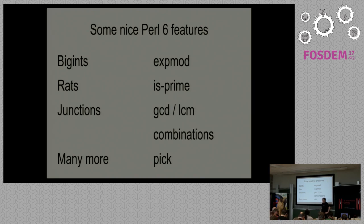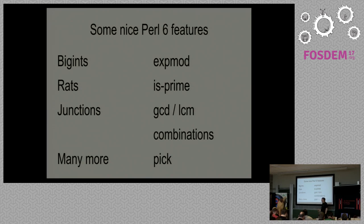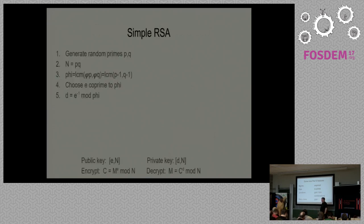Perl 6 has EXPMOD completely built in. Perl 6 also decided that this idea of 'is a number prime' is pretty fundamental and people keep writing it in every language, so they just tossed it in. We get a bunch of other little functions. Pick is surprisingly useful — you take a list and say give me a random element from it; it has lots of variations and is used all over the place.